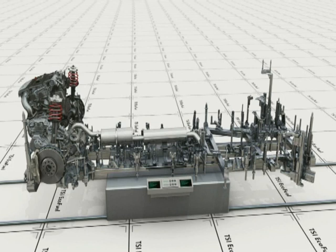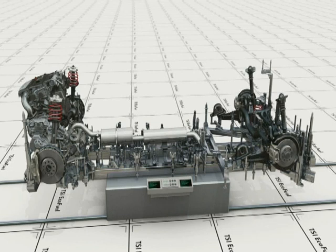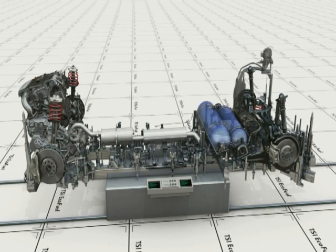The exhaust system of the Turan TSI Ecofuel ends ahead of the rear axle, which means that large volume cylinders can be accommodated at the rear of the vehicle.